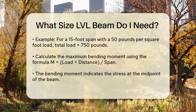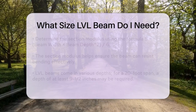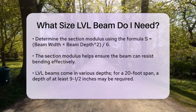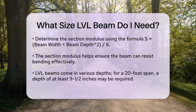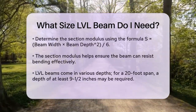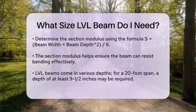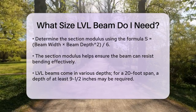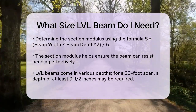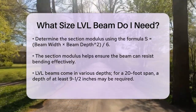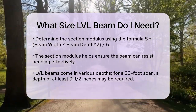The section modulus of the beam is also crucial. This is calculated using the formula S equals beam width times beam depth squared divided by 6. This ensures the beam can resist the bending moment effectively.